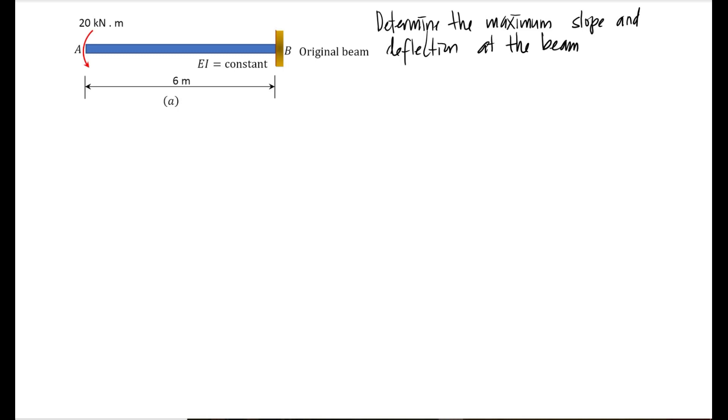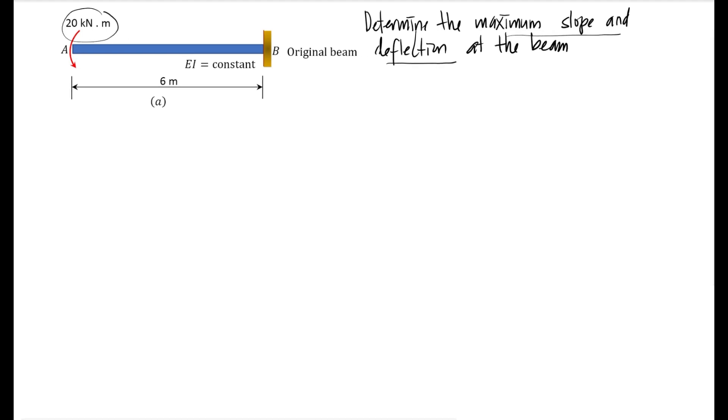Hi everyone, in this video I will explain how to determine deflection of beam using moment area method. For this cantilever beam, there is a 20 kilonewton-meter moment applied at the end of the beam. The problem is to determine the maximum slope and deflection at the beam. First of all, we need to draw M over EI diagram.